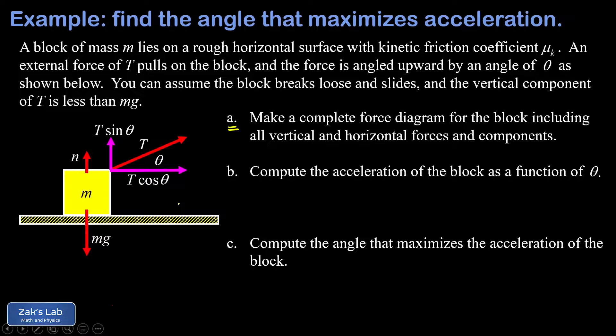Finally we need to get the force of kinetic friction into the problem. We're told we can assume this block is going to break loose and slide. That means it's sliding to the right, so the kinetic friction force is going to point to the left. I went ahead and put in our little formula for kinetic friction: mu_k times the normal force.